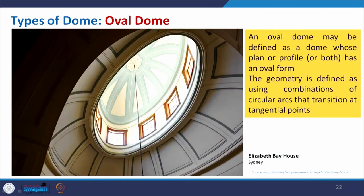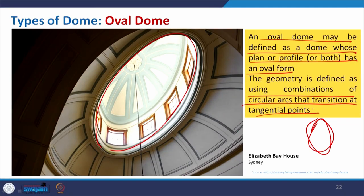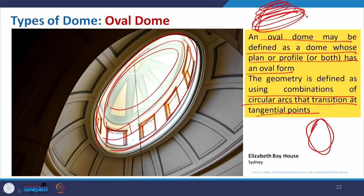The oval dome comes from the oval shape. For some interior spaces, the plan profile is oval instead of circular. An oval dome may be defined as a dome whose plan or profile has an oval form. The geometry is defined using a combination of circular arches that transition at tangential points, reducing to finally get the oval form through a series of connected ovals.